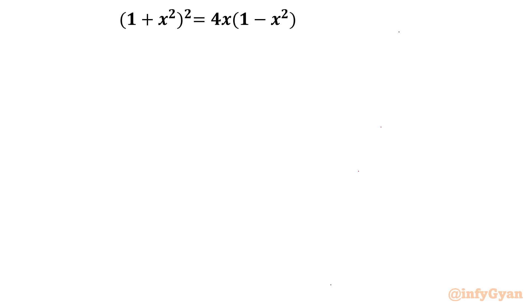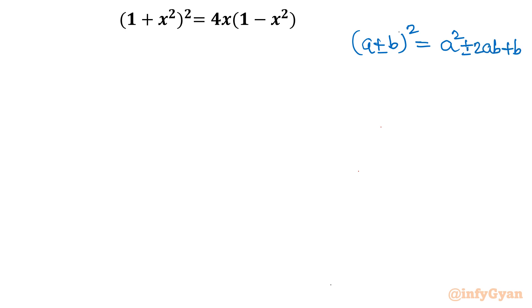Let's get started by writing one algebraic identity which is very powerful: (a + b)² = a² ± 2ab + b². This I will use. So let's use it.